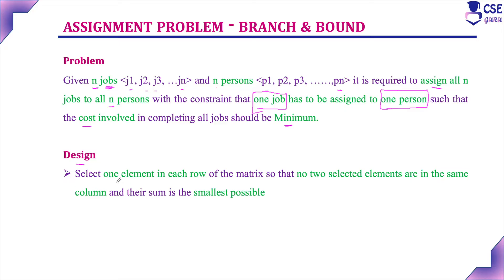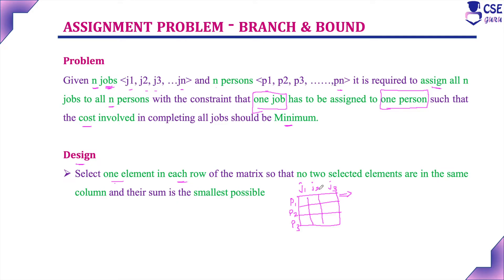The design is to select one element in each row. The N jobs and N persons are arranged in a row and column fashion — job 1, job 2, job 3 on one axis and persons P1, P2, P3 on the other — arranged in matrix form. We need to select one element in each row of the matrix so that no two selected elements are in the same column.